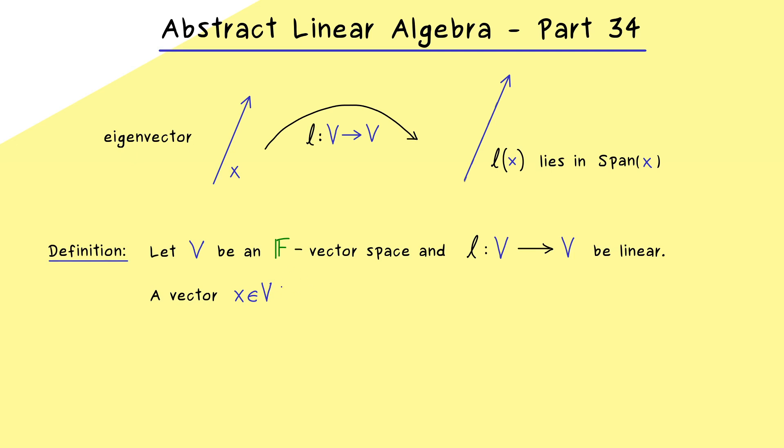Ok, now the first thing you should remember is that an eigenvector can never be the zero vector in the vector space. This totally makes sense, because the zero vector is always mapped to the zero vector again, so it always lies in the span of the zero vector. So it's not a special property for the zero vector, so we have to exclude it.